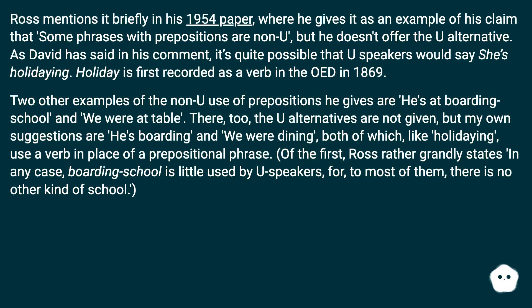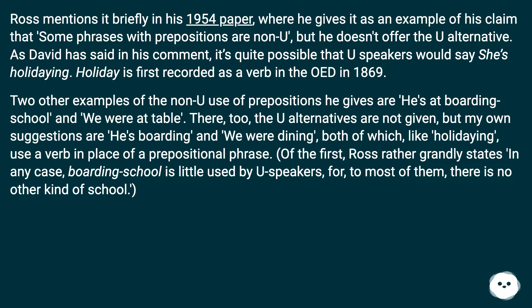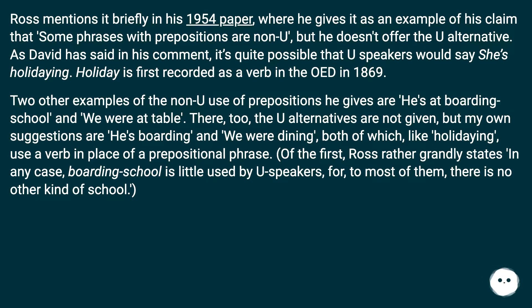Ross mentions it briefly in his 1954 paper, where he gives it as an example of his claim that some phrases with prepositions are non-U, but he doesn't offer the U alternative. As David has said in his comment, it's quite possible that U speakers would say 'she's holidaying' — 'holiday' is first recorded as a verb in the OED in 1869. Two other examples of non-U use of prepositions he gives are 'he's at boarding school' and 'we were at table.'